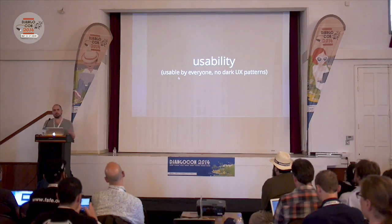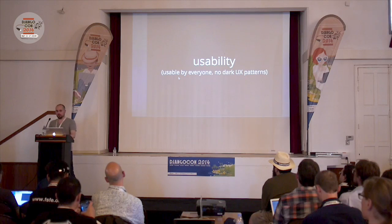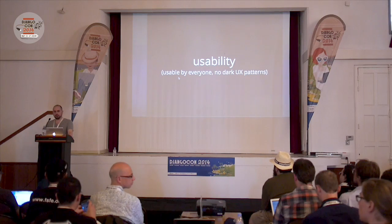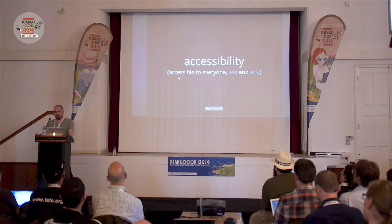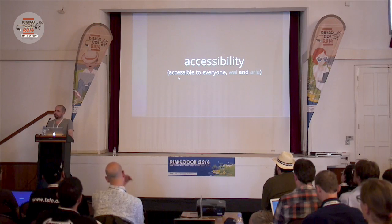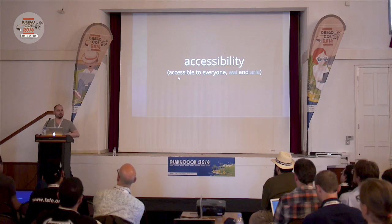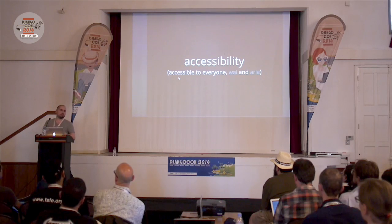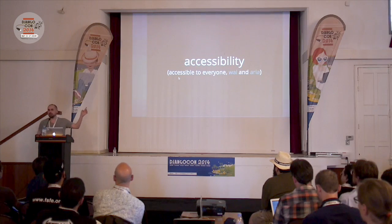We also have to build front-ends which are usable by everyone, not just the most technical ones. We should also ensure accessibility in our front-ends — that means when we build front-ends, we want to ensure that no matter your disabilities, you can use them: whether in terms of color, hearing, and so on. One important specification is ARIA, and if you don't know anything about it, you should at least click on the link later and learn about it.